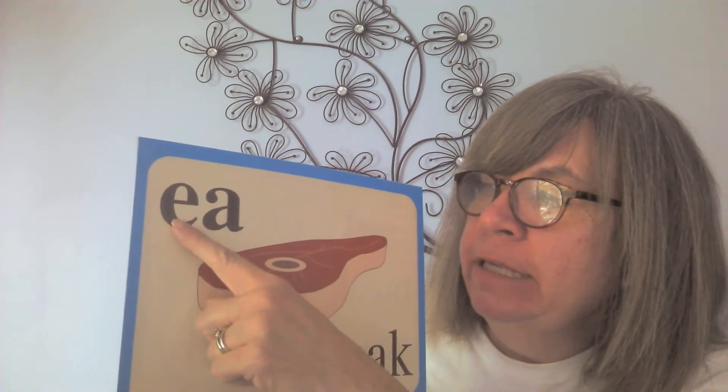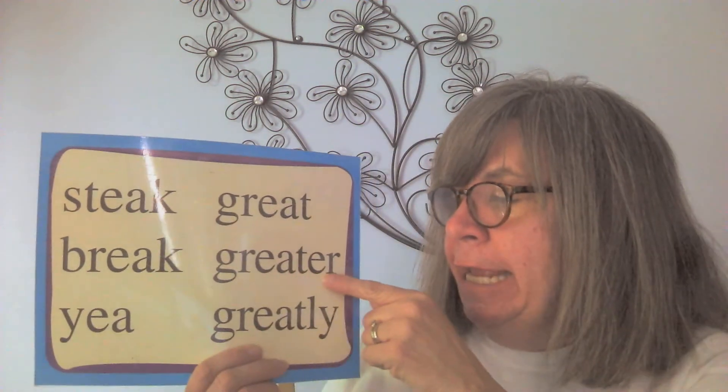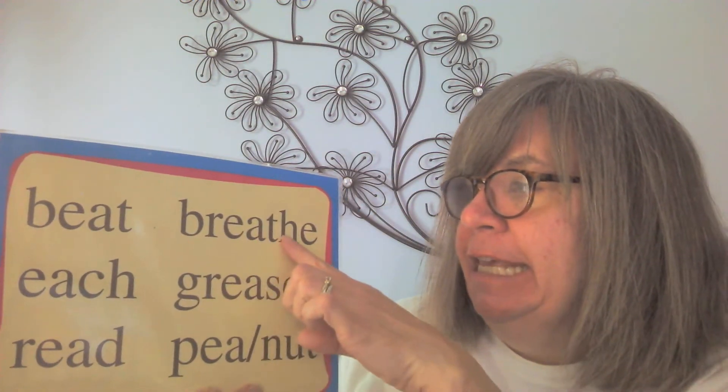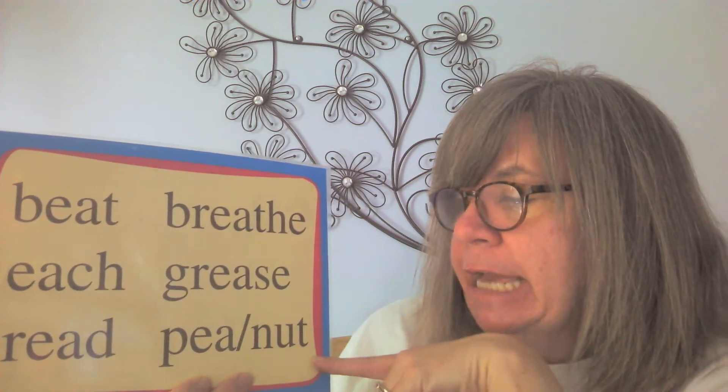What I want to review is the three sounds of EA. EA can say /ā/ in 'stake' — we hear A say its own name and the E is silent: stake, great, greater, greatly, break. EA can say /ē/ in 'leaf' like a mouse word — E says its own name and the A is silent: eat, beat, each, read, breathe, grease, peanut.